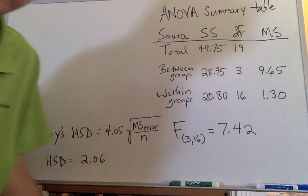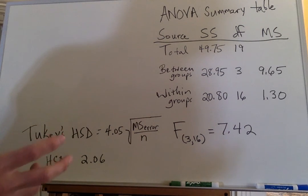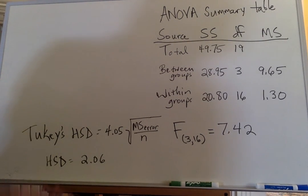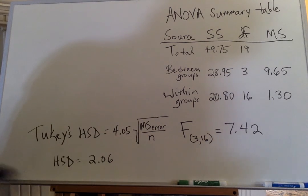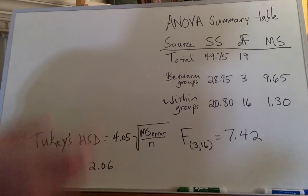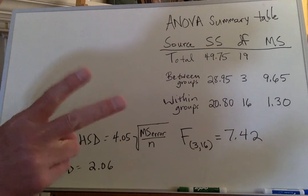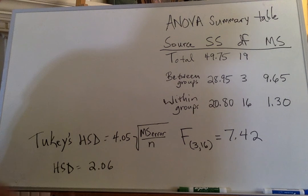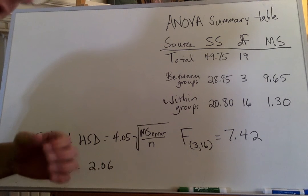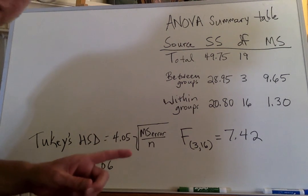Before I move on to correlation, I just wanted to bring this whole analysis of variance discussion full circle. These are the results of our analyses that we conducted last time. I wanted to bring us back to the initial discussion of analysis of variance, when I talked about two problems that would occur if we did a series of multiple t-tests. We came up with two reasons why we needed to develop a new statistical test. Do you remember what they were?